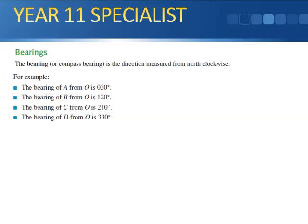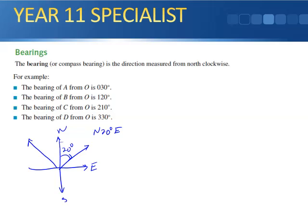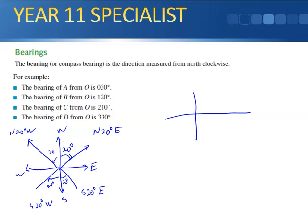Bearings: there are two types. Compass bearings start at north or south — for example, N20°E, N20°W, S20°E, or S20°W. True bearings always start at north and are read clockwise, expressed as three digits — for example, 020° true. If an angle is 20 degrees east of north, it's 020° true; 20 degrees west of north going all the way around gives 160° true.